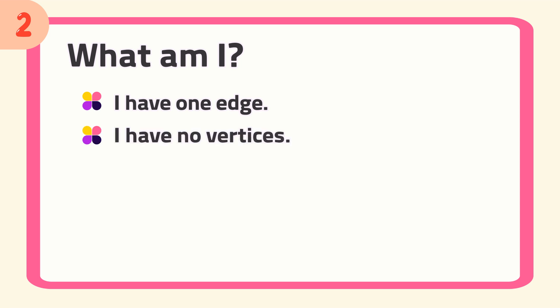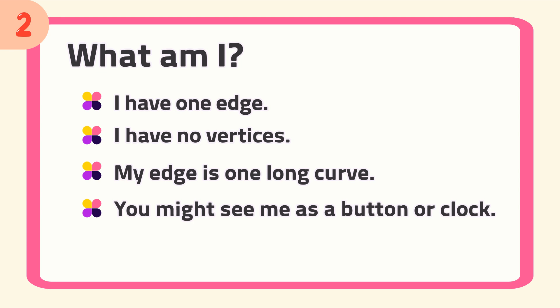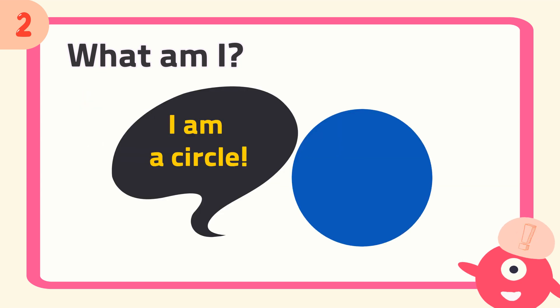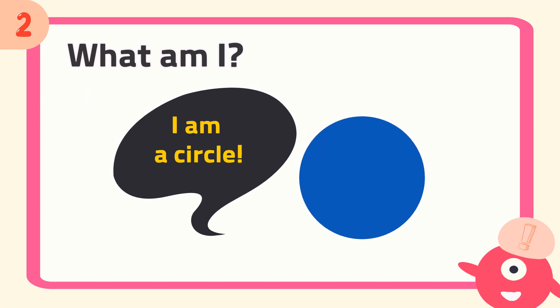Number two, what am I? I have one edge, I have no vertices. My edge is one long curve. You might see me as a button or clock. The answer is, I am a circle.